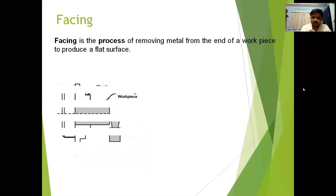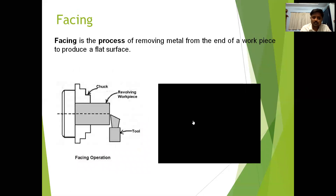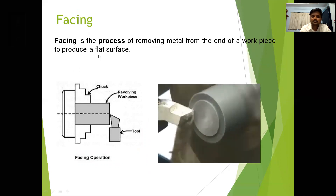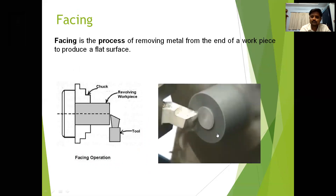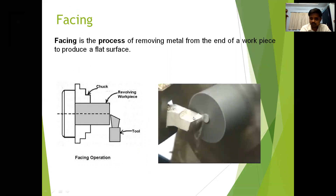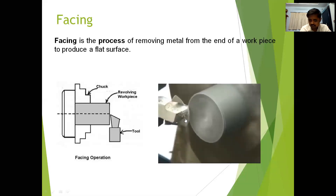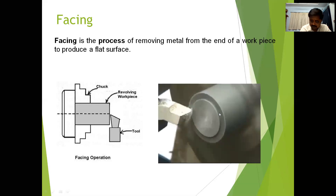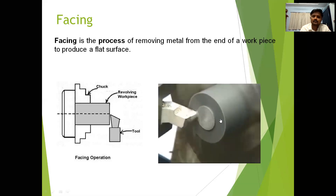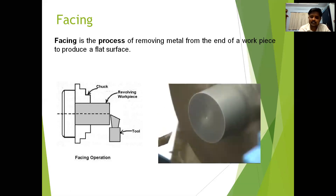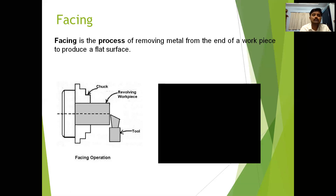Next one is the facing operation. Facing is the process of removing metal from the end of the workpiece to produce a flat surface. The intention of facing is to produce flat surfaces. We are removing the metal from the end face of the workpiece, making the end surface flat. Before starting any operations, first of all you have to do the facing operation.